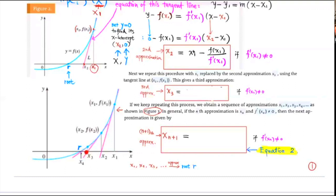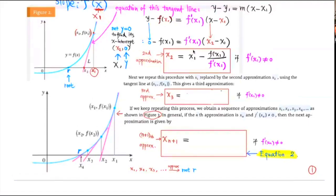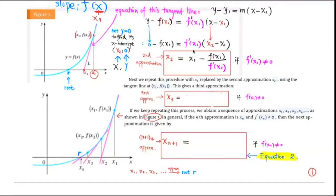We can continue: from x₃, we go up, hit the graph, draw the tangent line at that point, and find the x-intercept, which is x₄. As you can see, it's getting really close to the root of the equation. So that's the idea — that's Newton's Method. Now, if you know x₂, what would x₃ equal to?